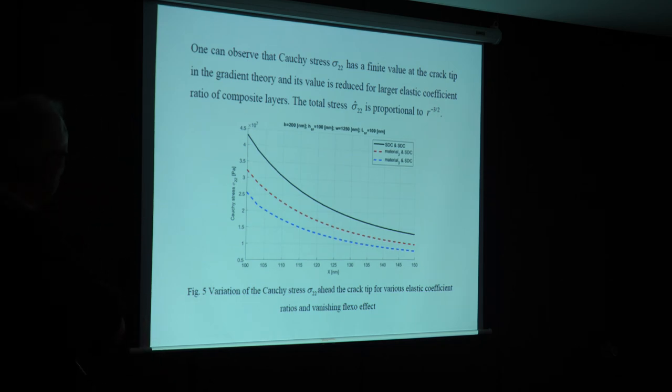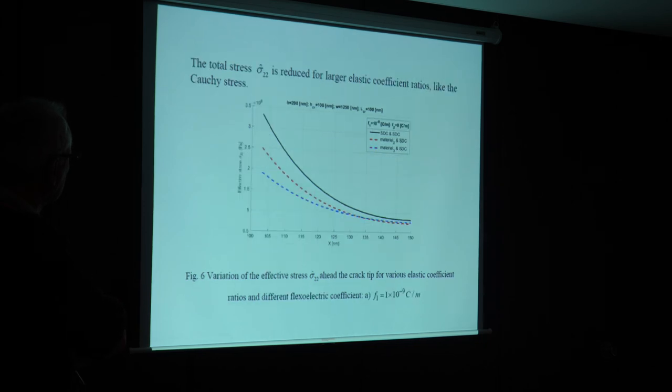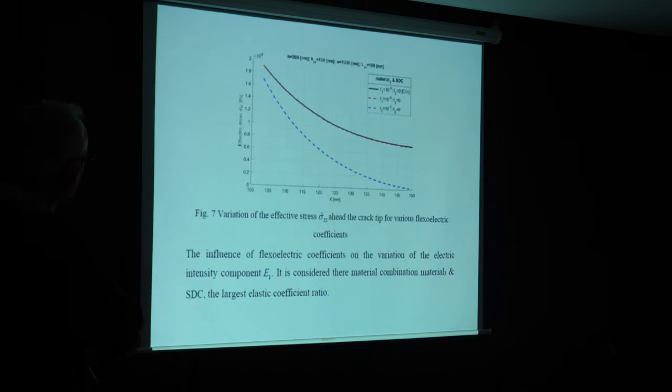And here, it's the variation of the Cauchy stresses at the crack tip, and you can see the finite value of the stresses at the crack tip, it is opposite to the classical theory. And for the effective total stresses, it is singularity of r minus one half, and you can see here the variation of effective stresses, and here you can see the effective stress for the large value of the flexoelectric coefficient.